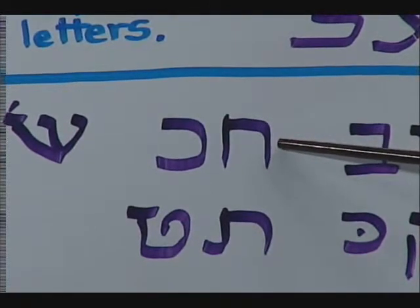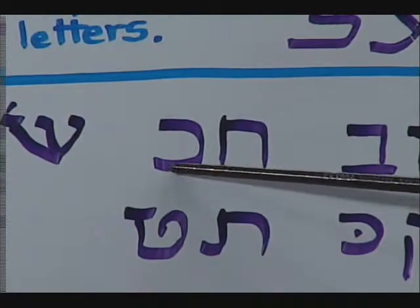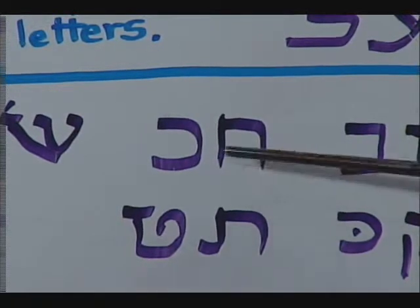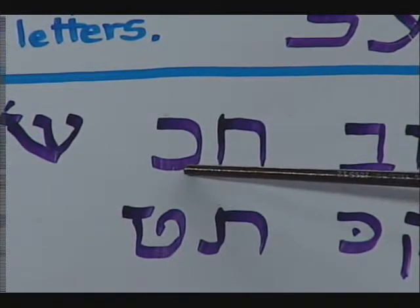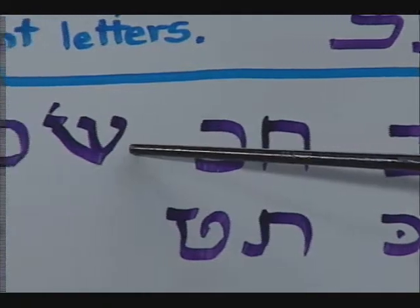We have the het. It doesn't look much like the khaf, but it has that same sort of guttural sound, a tiger growl. The het is a stronger growl, and the khaf is a softer.